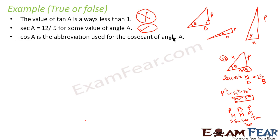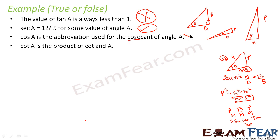Third statement: cos A is the abbreviation of cosecant of A — this is false, because cosecant is written as cosec, not cos. Fourth statement: cot A is the product of cot and A — this is also false. We never say cot A equals cot times A.